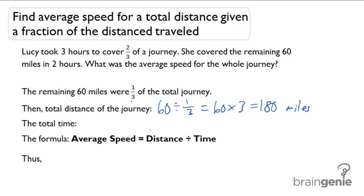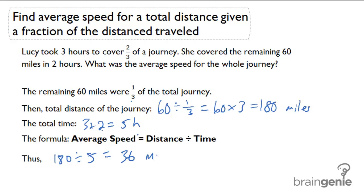The total time: 3 plus 2 equals 5 hours. Now we can find average speed. Average speed equals distance divided by time, so 180 divided by 5, which is 36 miles per hour.